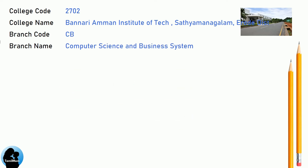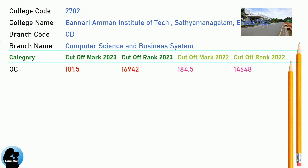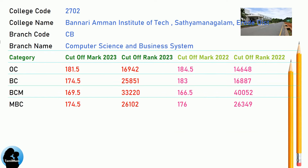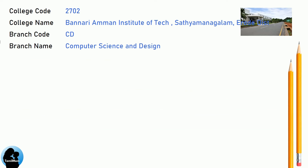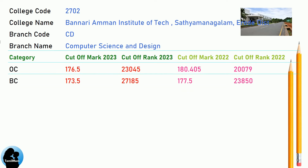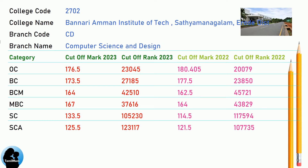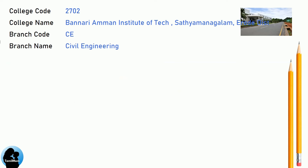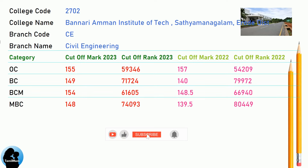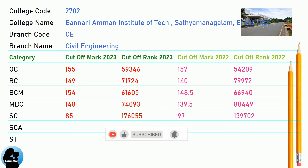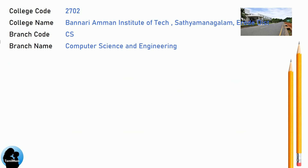Cut-off marks for Computer Science and Business Systems. Cut-off marks for Computer Science and Design. Cut-off marks for Computer Science and Engineering.